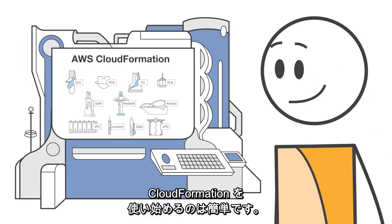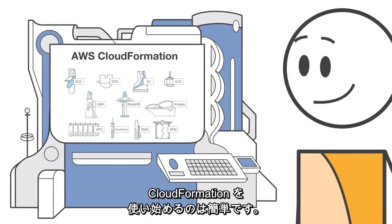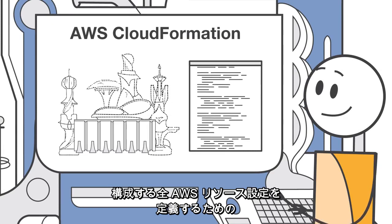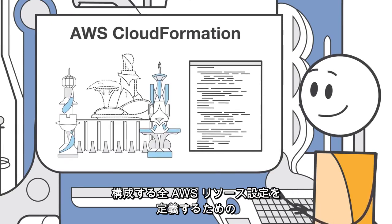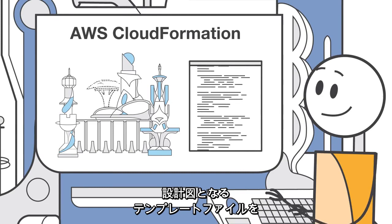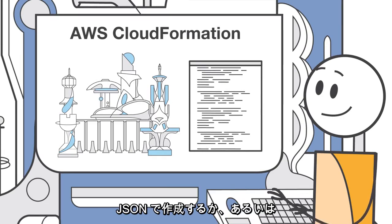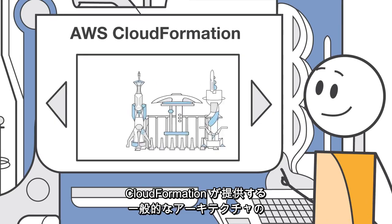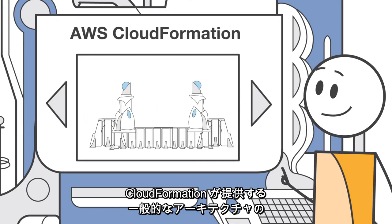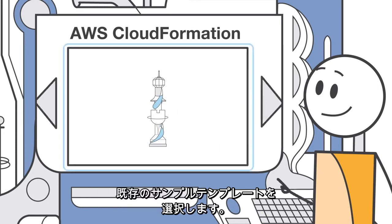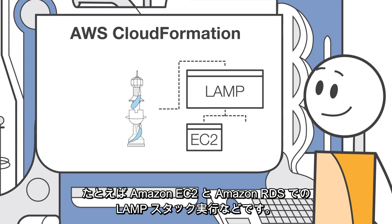It's easy to get started with CloudFormation. You simply create a template, which is a JSON file that serves as a blueprint to define the configuration of all the AWS resources that make up your infrastructure and application stack. Or you can select a sample pre-built template that CloudFormation provides for commonly used architectures such as a LAMP stack running on Amazon EC2 and Amazon RDS.